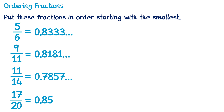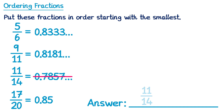Now all we need to do to put these in order is compare the decimals. The smallest decimal is 0.7857 because it's the only one that begins with a 7, so 11 over 14 must have been the smallest fraction. All the other numbers have an 8 as the first digit after the decimal point, so we move to the next digit: the first has a 3, the second has a 1, and the last has a 5. Since 1 is the smallest, 9 over 11 is the next smallest. Then comparing 0.83 and 0.85, 5 sixths is next, and the biggest is 0.85 which is 17 over 20.